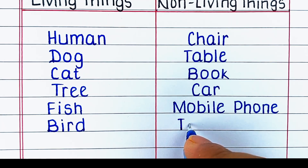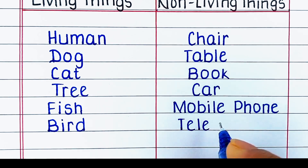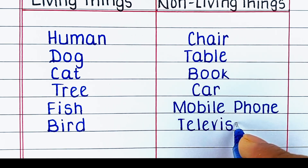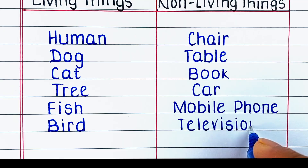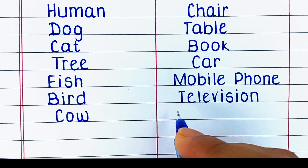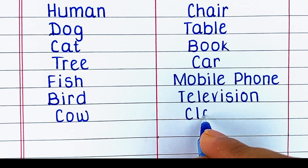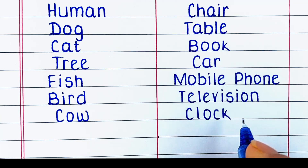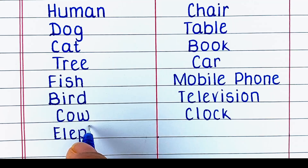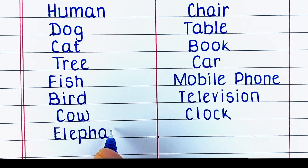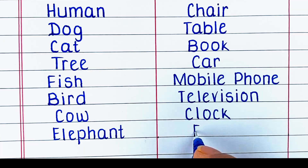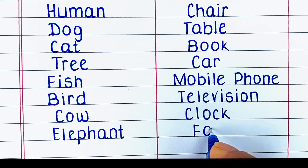Next living thing is bird. Next non-living thing is television. Next living thing is cow. Next non-living thing is clock. Next living thing is grass. Next non-living thing is fan.